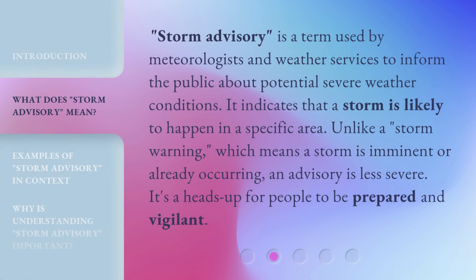Storm advisory is a term used by meteorologists and weather services to inform the public about potential severe weather conditions. It indicates that a storm is likely to happen in a specific area. Unlike a storm warning, which means a storm is imminent or already occurring, an advisory is less severe. It's a heads up for people to be prepared and vigilant.